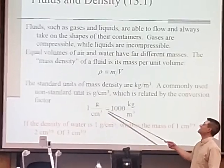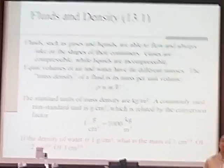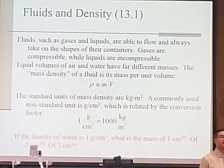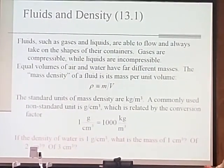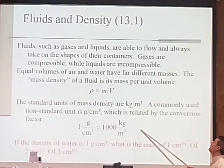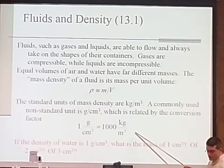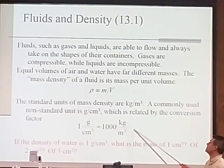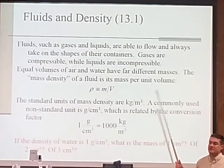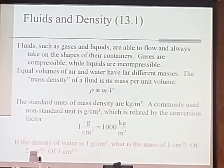One gram per cubic centimeter is equal to 1,000 kilograms per cubic meter. In the calculations we do, we will generally be using standard units. The density of water actually happens to be one gram per cubic centimeter.